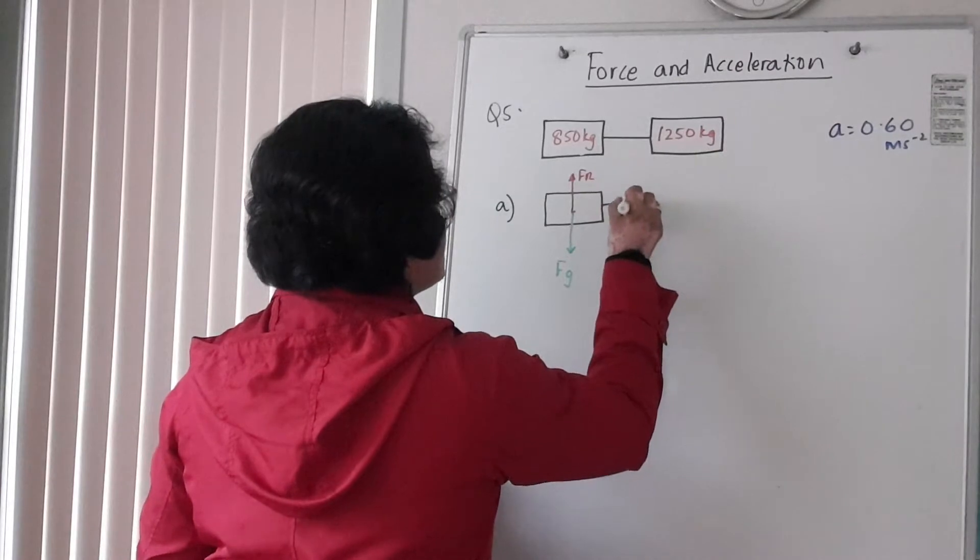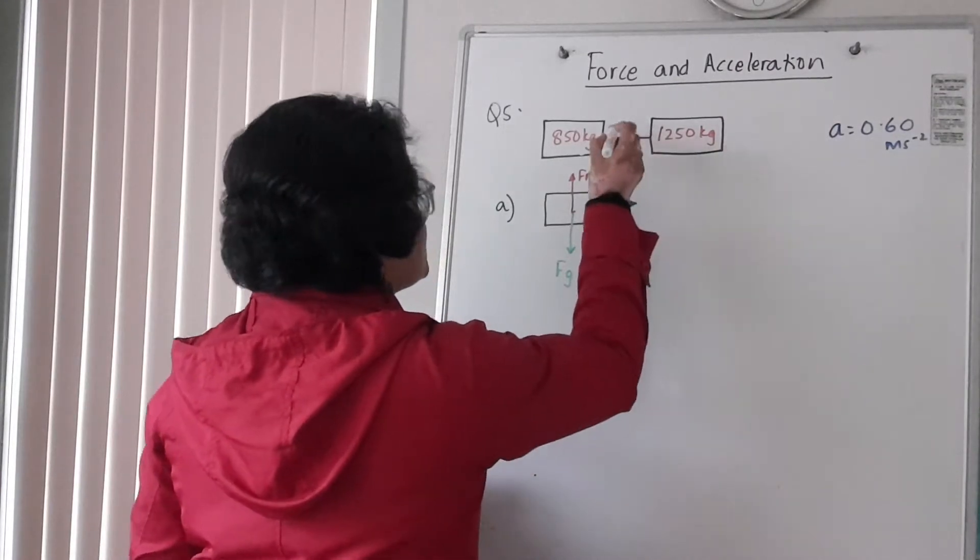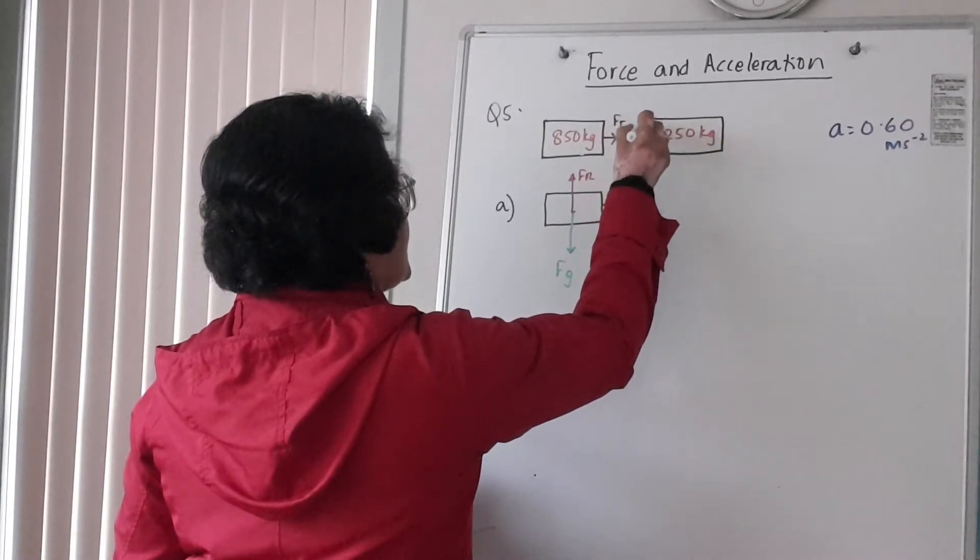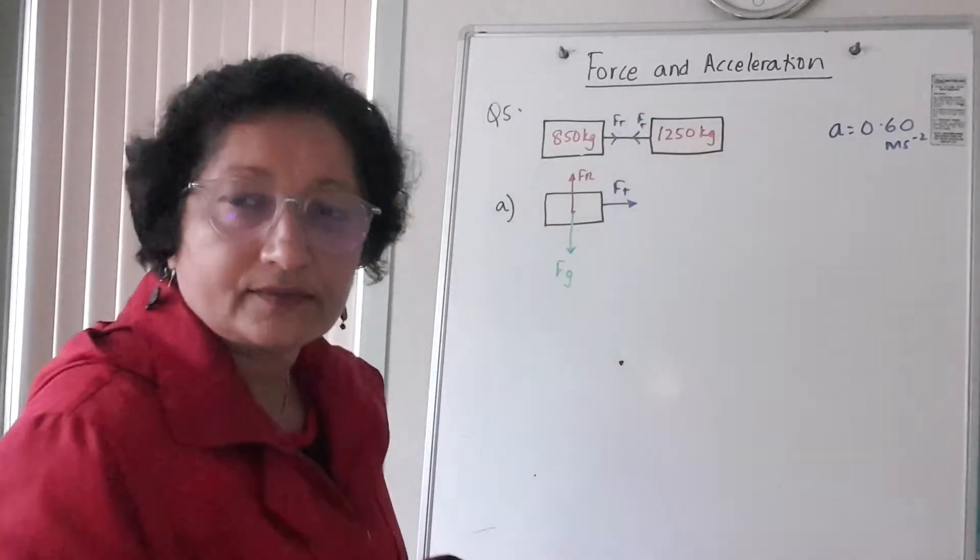The unbalanced force is your tension force. So what actually happens is there's tension force acting both ways and the size of that tension force is equal.